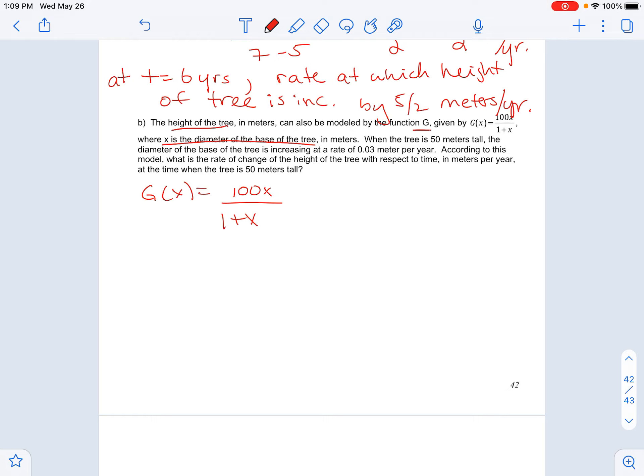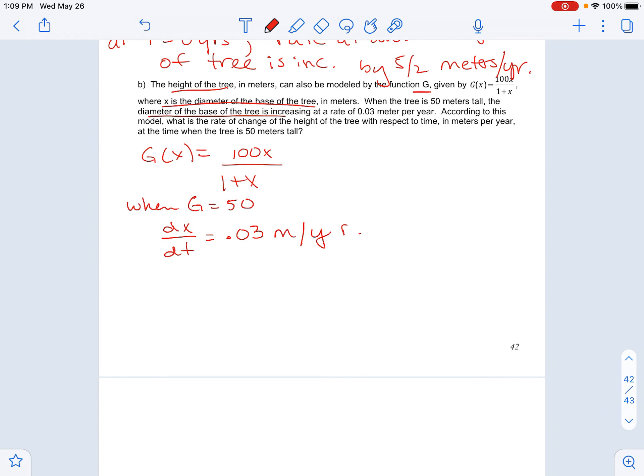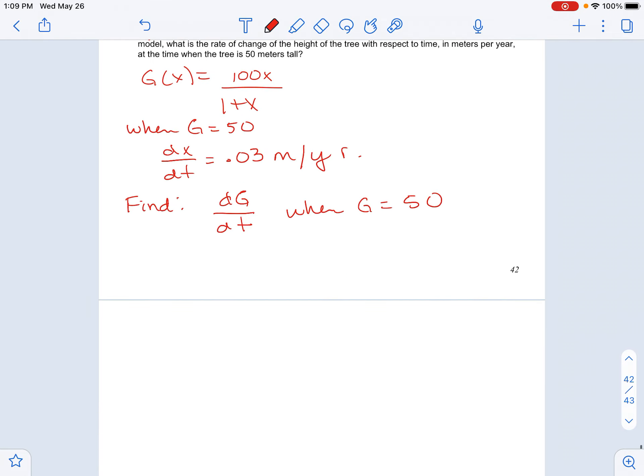When the tree is 50 meters tall, so they're telling us when g is 50. G is the height. The diameter of the base of the tree, so this is your x, so this is increasing. So it's talking about the rate. This is increasing at a rate of 0.03 meters per year. So this is what's given. What they're asking us to find is the rate of change of the height of the tree. So they want the rate of change of the height with respect to time when the tree is exactly 50 meters tall.